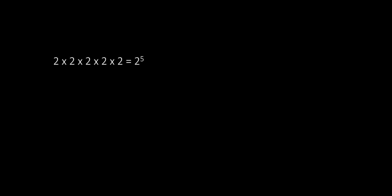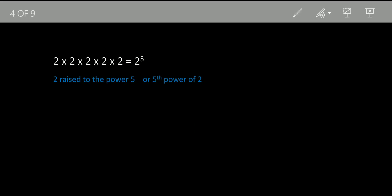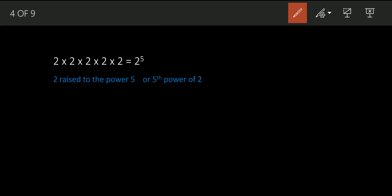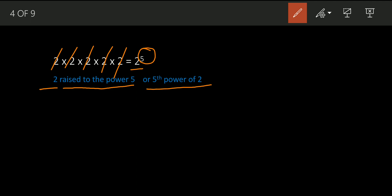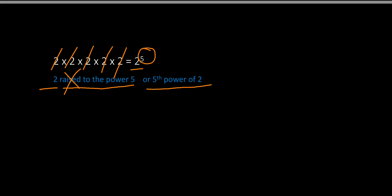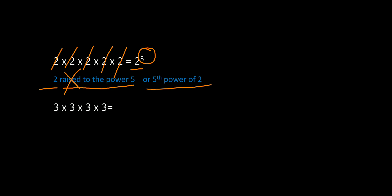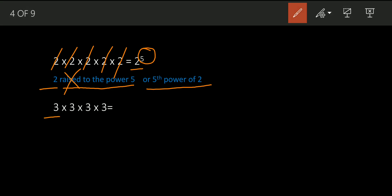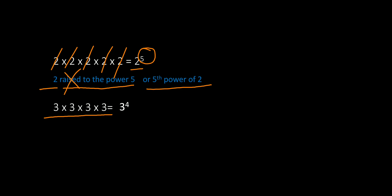Now, how do we read indices? Here we have multiplied the number two five times — one, two, three, four, five. So its base is two and its power is five. We read this as 'two raised to the power five,' or 'fifth power of two,' or simply 'two to the power five.' Now another example: three multiplied four times — we write this as three raised to four.